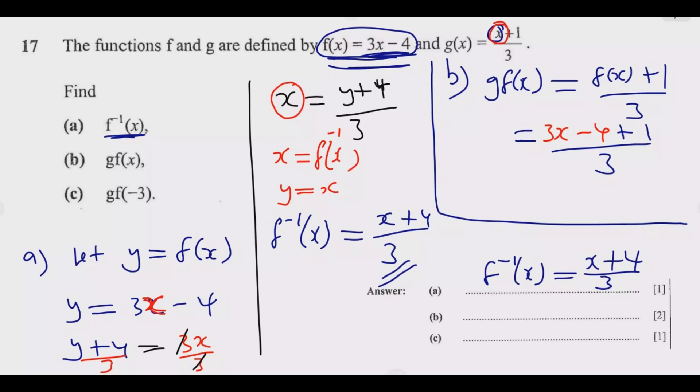Take note, then at this point just simplify. We're going to get negative 4 plus 1, which is negative 3. So we have (3x minus 3) over 3. We divide, and this gives me x minus 1. So this is g(f(x)). This is our final answer, which is x minus 1.